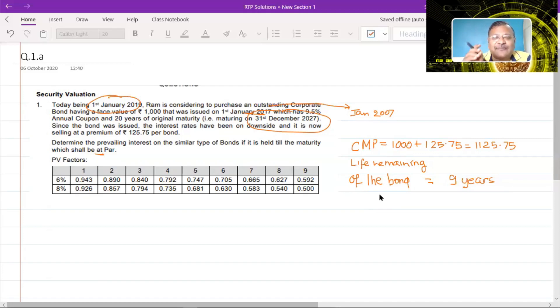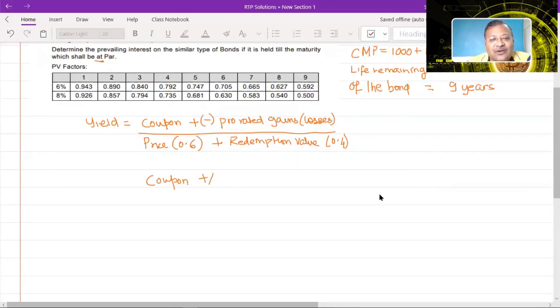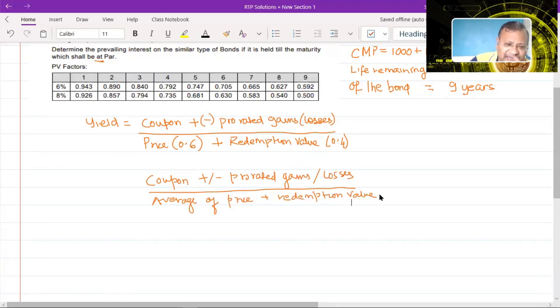Now if you remember the concept which was taught to you in the valuation of bond or valuation of securities chapter, you will recollect that yield of a bond was calculated as coupon plus or minus prorated gains or losses whole thing divided by price into 0.6 plus redemption value into 0.4. Now you will find this formula a little strange because I am sure what you would have been taught would have been something like this.